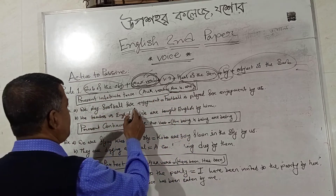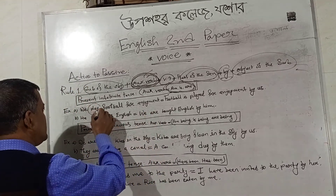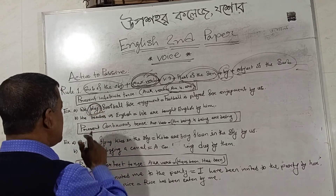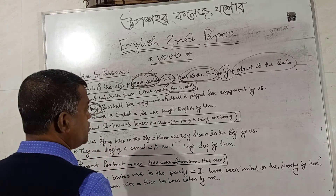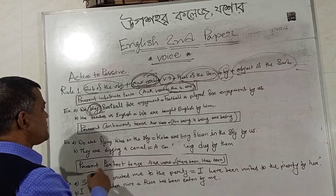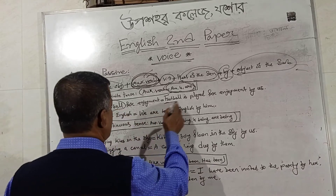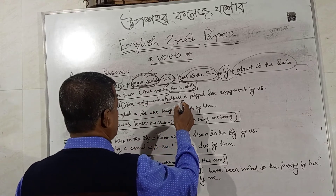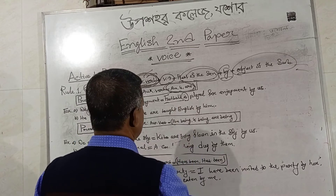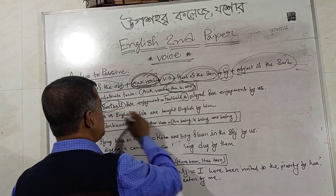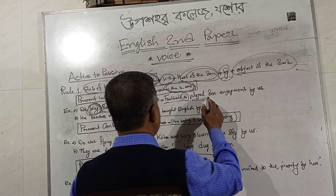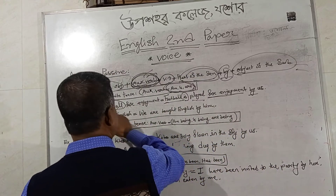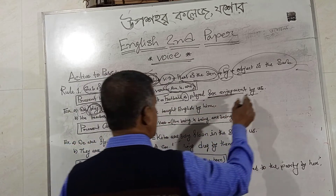For example: 'We play football for enjoyment.' This is present indefinite tense because the verb is in its base form. At first we will turn the object 'football' into subject. Then we will use the auxiliary verb 'is'. Then V3 — the V3 of 'play' is 'played'. Then the rest of the sentence 'for enjoyment'. Then 'by us' — the object of 'we' is 'us'.